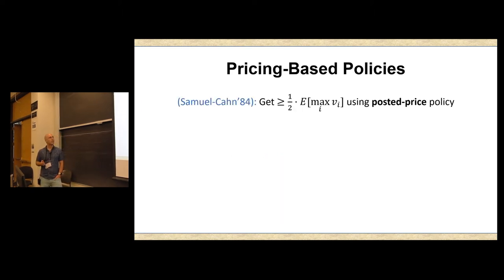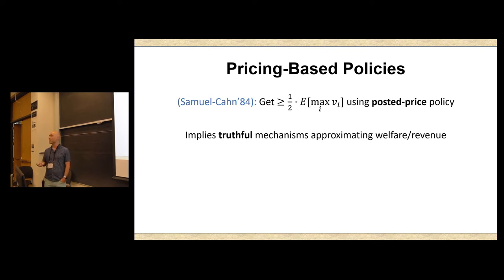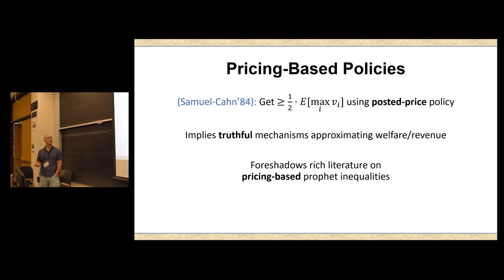So switching things up a little bit, six years later, Samuel Kahn showed that you can get the same guarantee, the same prophet inequality, using a simpler pricing-based policy, posted price policy. So this is what Nick referred to as threshold policies. They have a bunch of nice properties. Among others, they're very simple. Another nice property is that they imply a number of truthful mechanisms for maximizing social welfare, for maximizing revenue, et cetera. And her work has foreshadowed a rich literature on posted price-based policies for prophet inequalities.